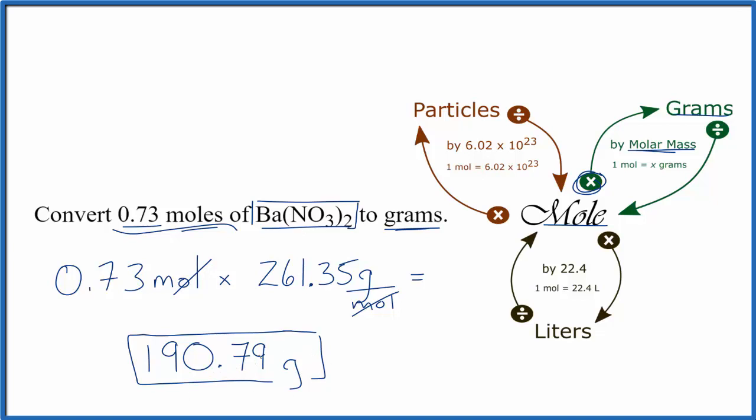If you were given the grams and asked to find moles, you would just do the opposite. You have grams, you'll divide by the molar mass, and that'll give you moles of the barium nitrate here.